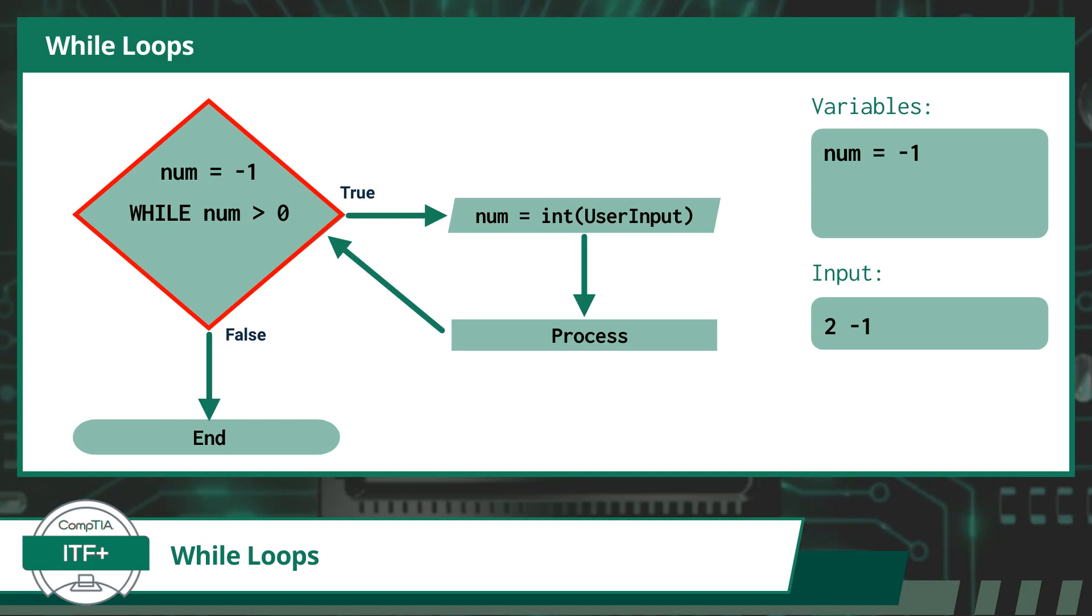Now it is time to once again re-evaluate and see if the condition statement of the while loop is still true. Here we can see that the variable num, which is now equal to minus 1, is no longer greater than 0, so we will not execute the code within the while loop anymore. Since the condition check has now evaluated to false, we will continue with any remaining code statements or in our case, reach the end of the program.